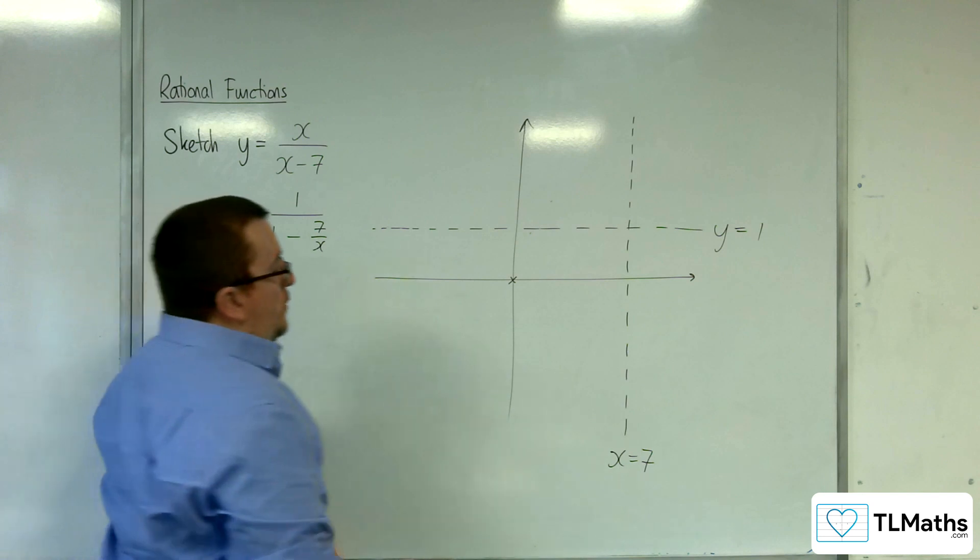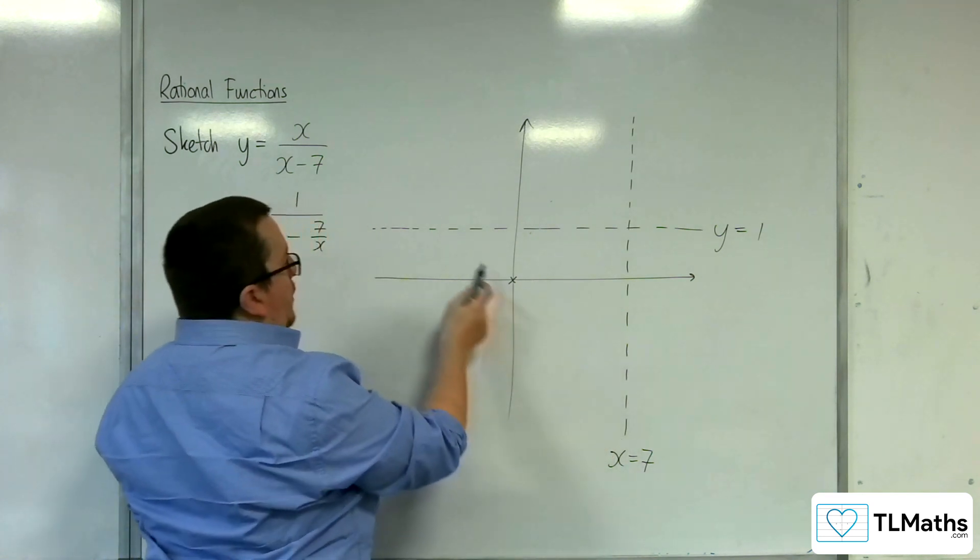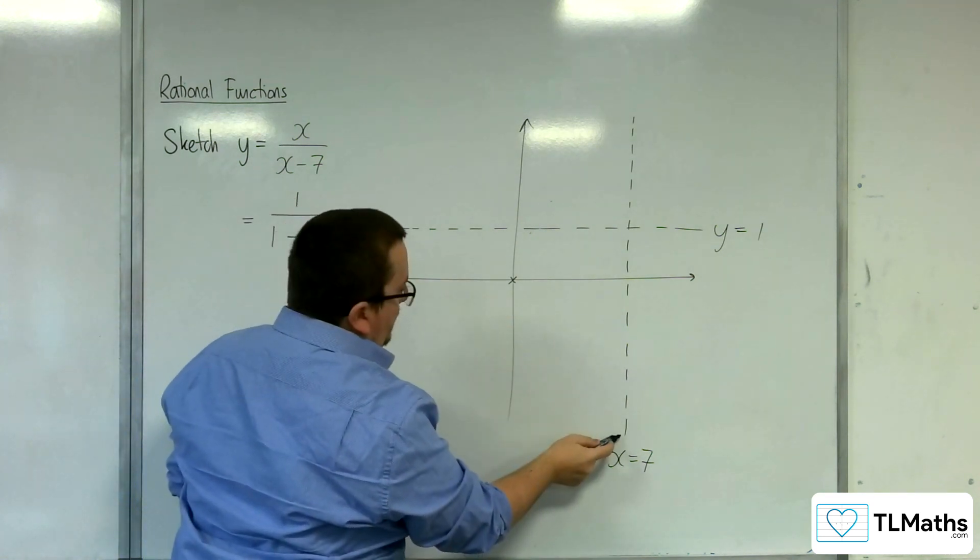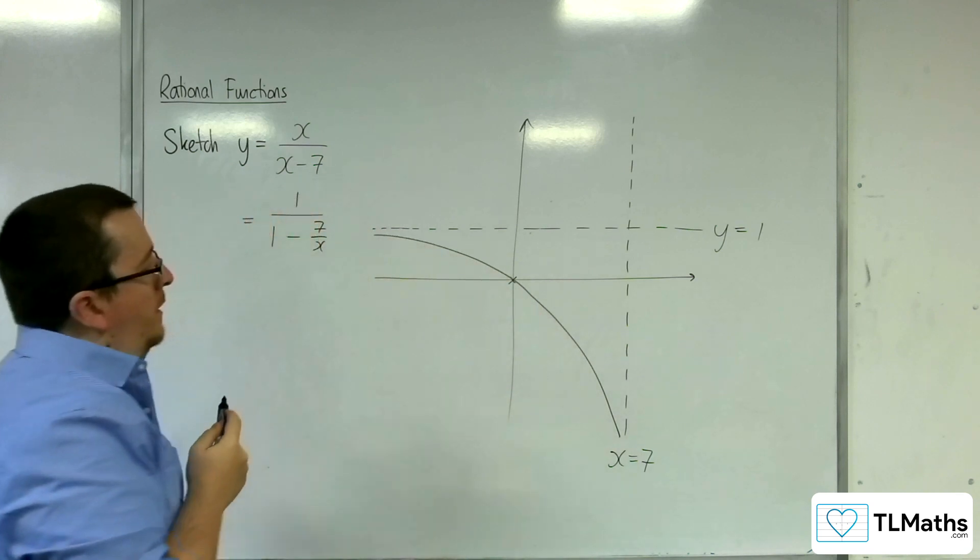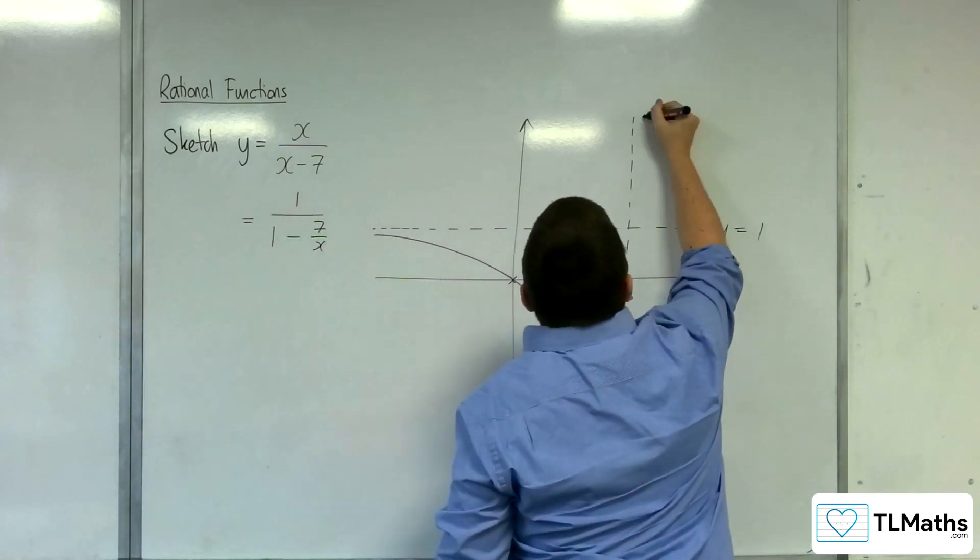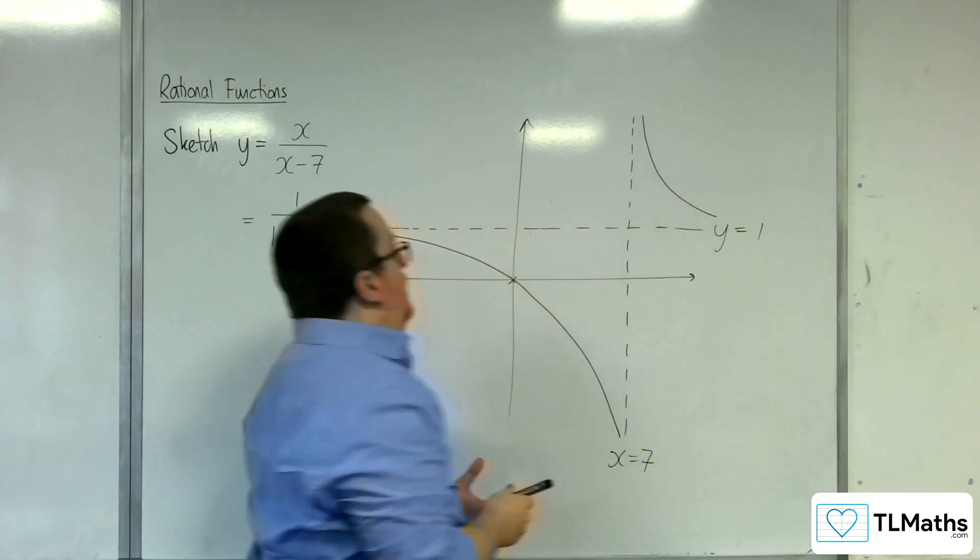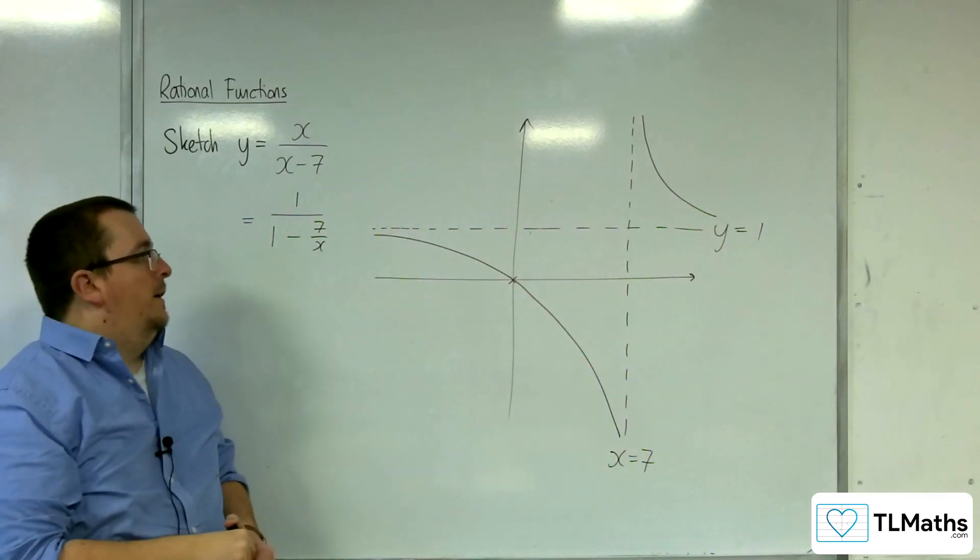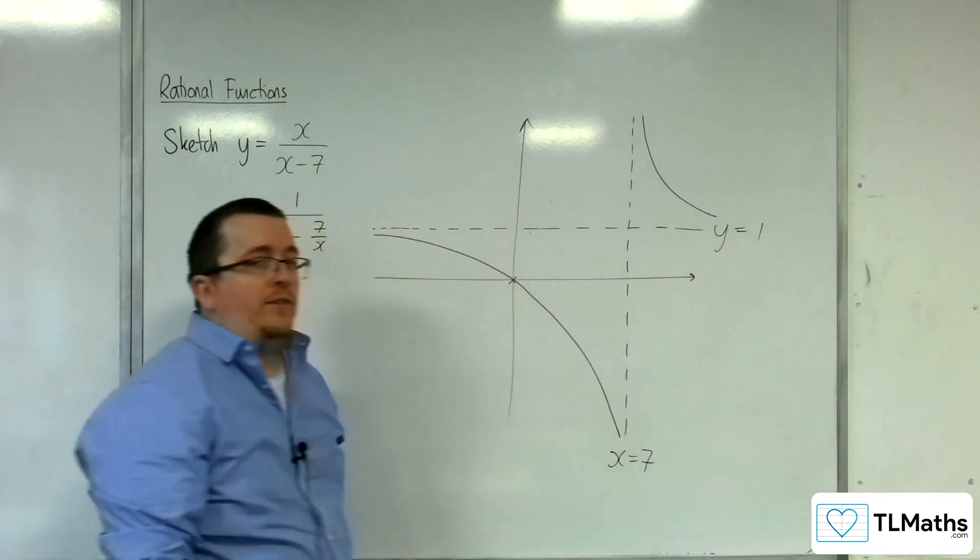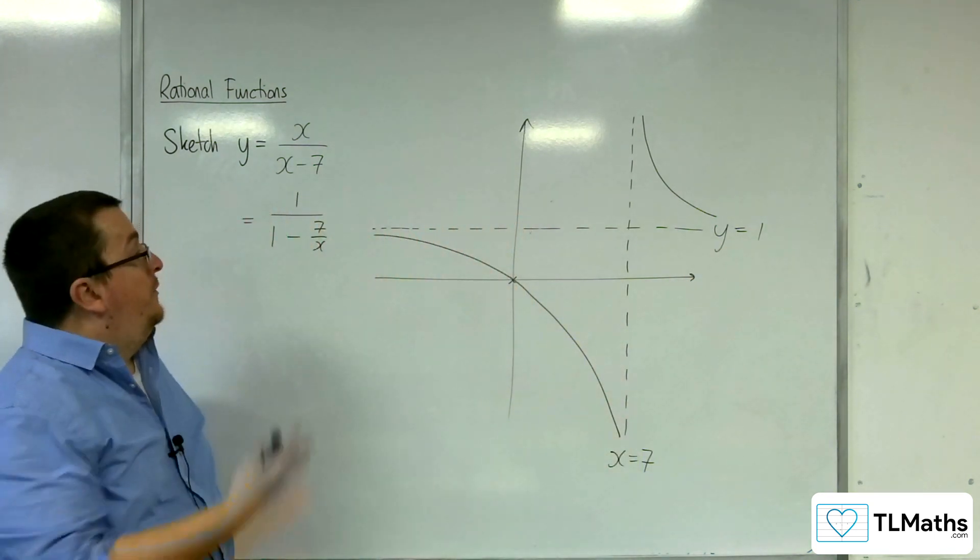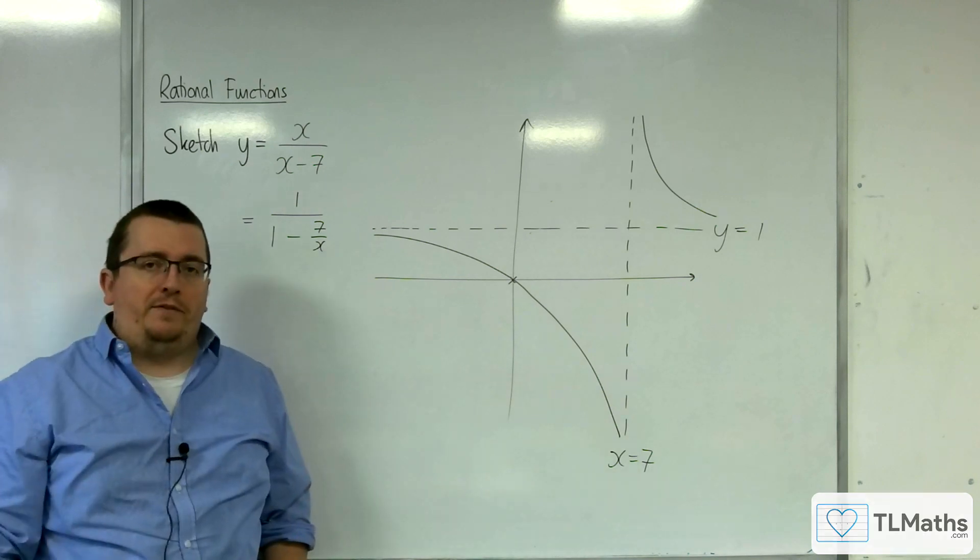And so we must be tending towards both those asymptotes, and so we must be doing something like this, going through the origin like so, and we'll be up here for that part of the graph. Because we can't have it down here, because we can't have the graph crossing the x-axis again. So that's how we can sketch y equals x over x minus 7.